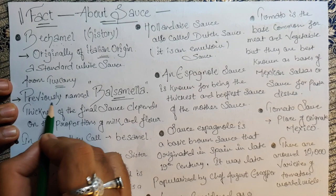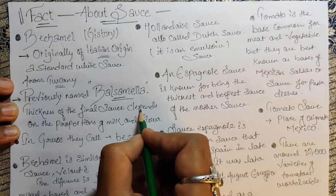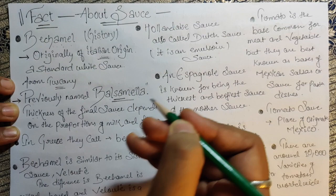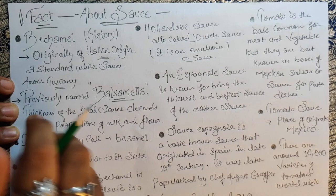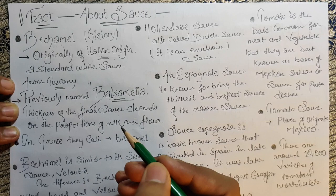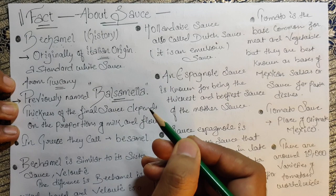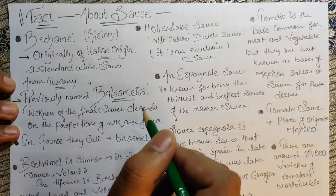Béchamel was previously named differently in Italian before it became known as béchamel. The thickness of the final sauce depends on the proportion of milk and flour. Whenever you're making béchamel sauce — thin or thick — you have to choose the proportion, or the quantity of roux, which is a one-to-one ratio of butter and flour. If you add more roux it becomes thicker; less roux gives a thinner sauce. That combination is always one-to-one.